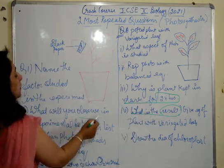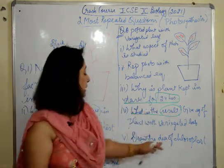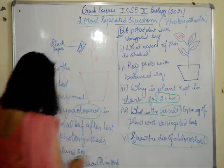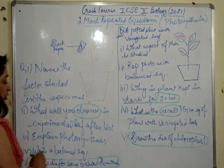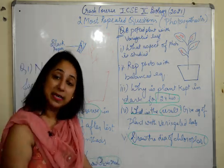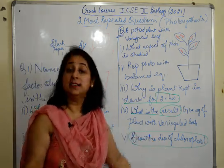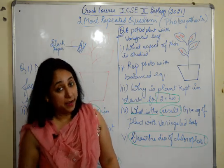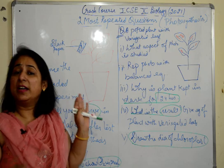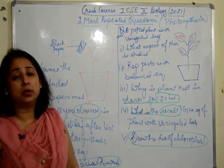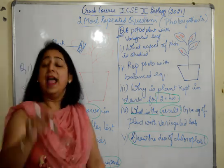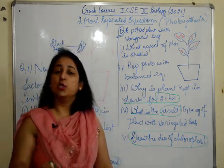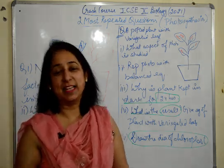What is the result? — they will always ask for the result in any experimental question, what do you observe. Then draw a diagram of the chloroplast — as I told you in my previous video, the chloroplast diagram comes for drawing. These are the most important and repeatedly asked questions from the paper point of view. Any experiment can come, so keep watching, liking, sharing, and subscribing.